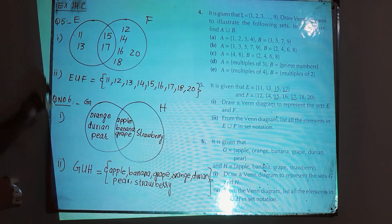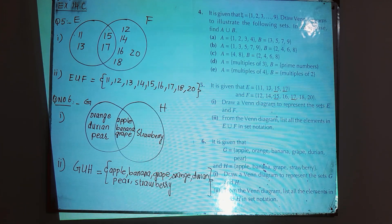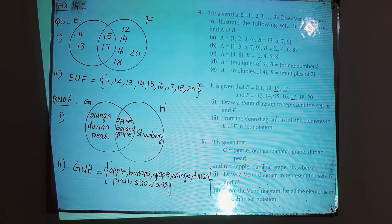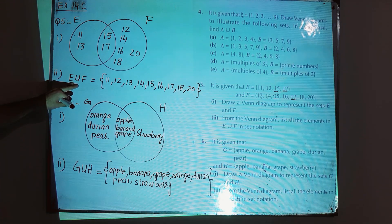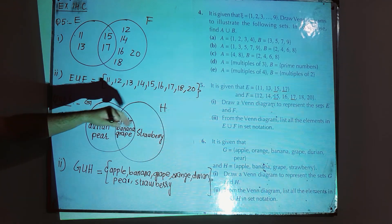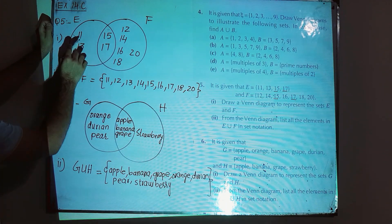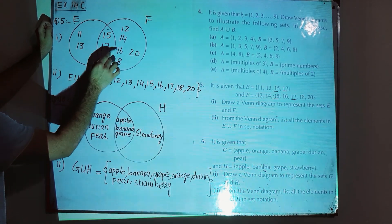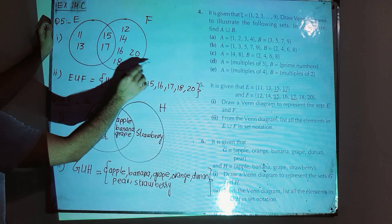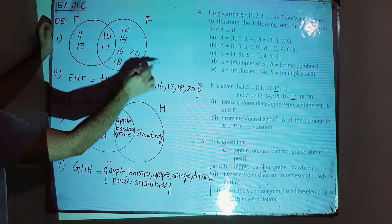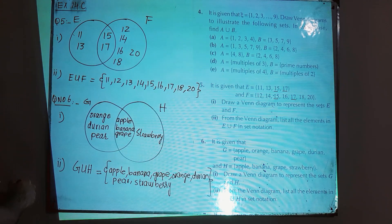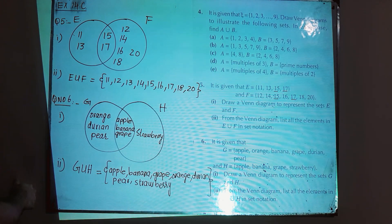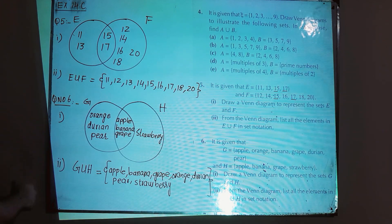Part two: from the Venn diagram, list all elements in E union F in set notation. E union F means writing all elements of E and F in a single set: {11, 12, 13, 14, 15, 16, 17, 18, 20}. Combining all elements of E and F gives you E union F.